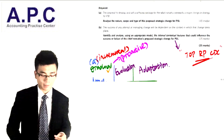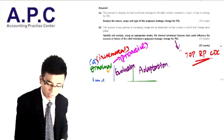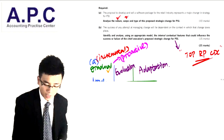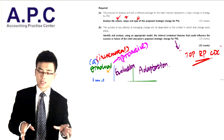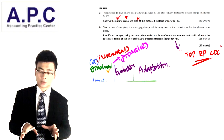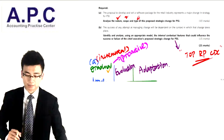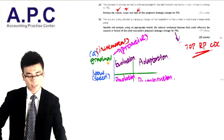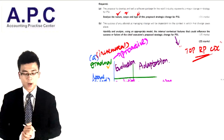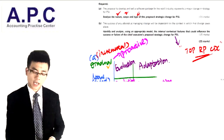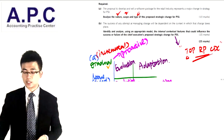For Part A, on the nature, scope, and type, we're going to identify two natures, two scopes, and four types of change, which can give us almost eight to ten marks in the exam. For Part B, with fifteen marks, I'm going to write two points in relation to each of the eight elements, which gives us the full marks for this question.